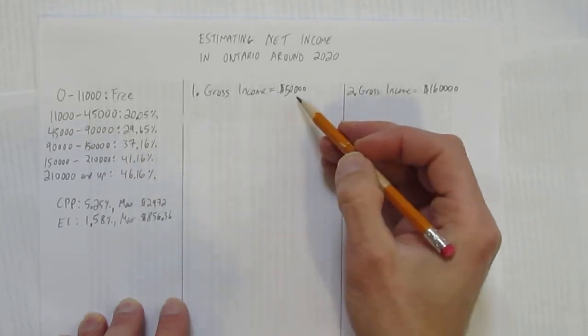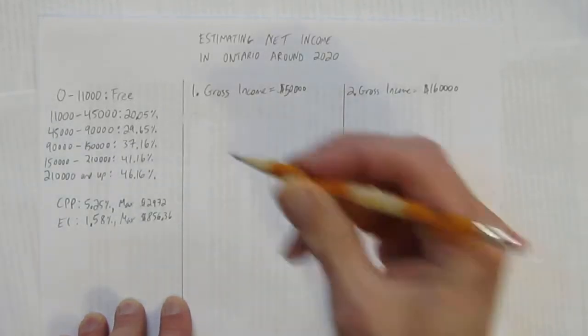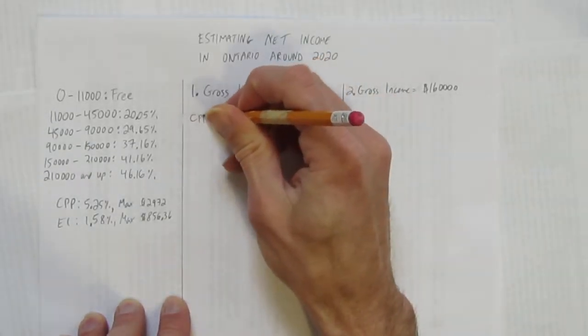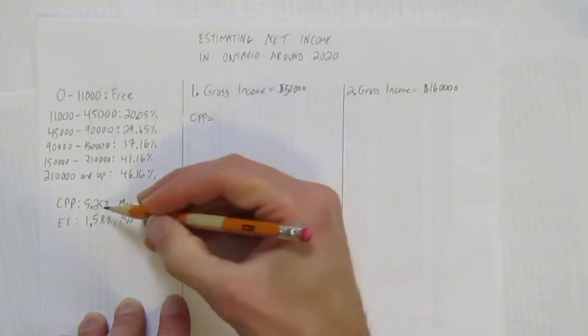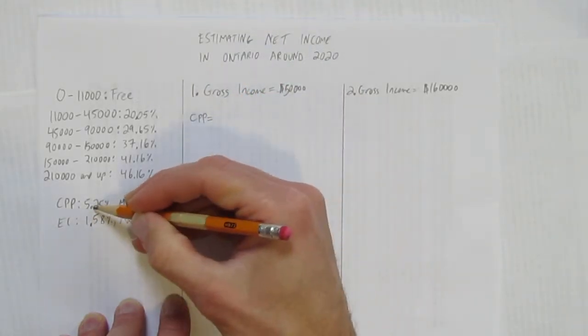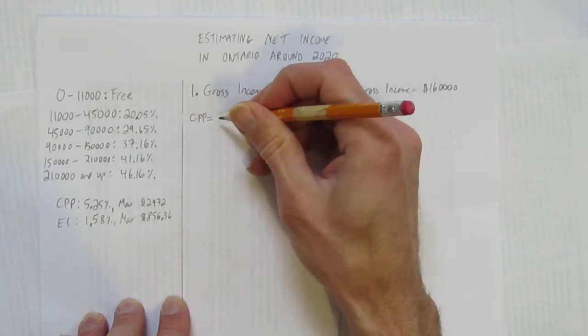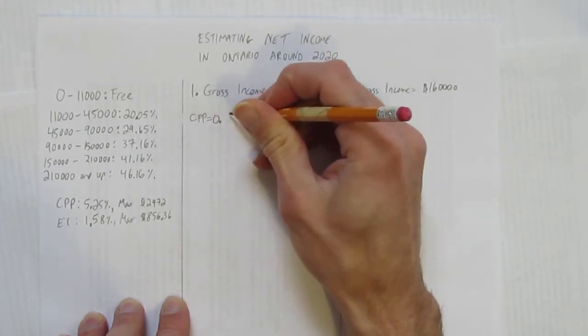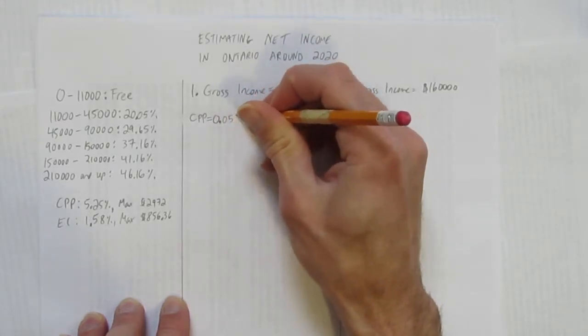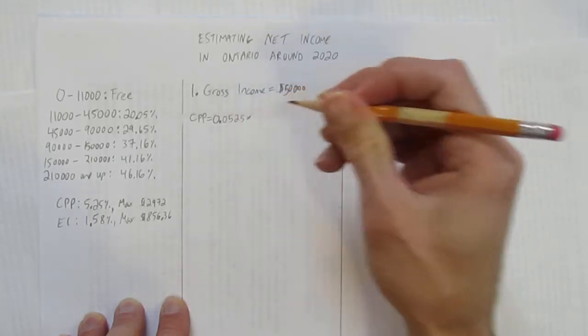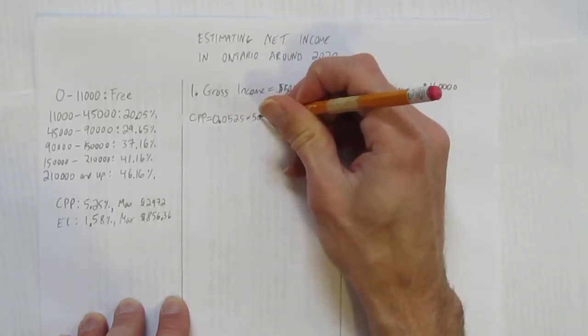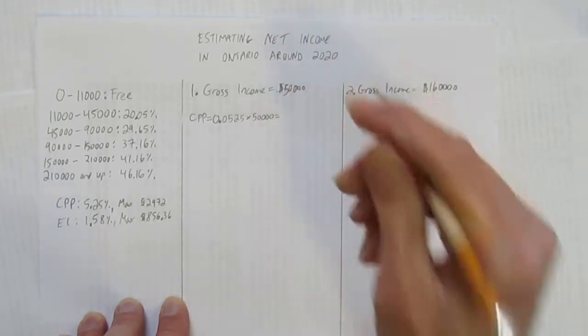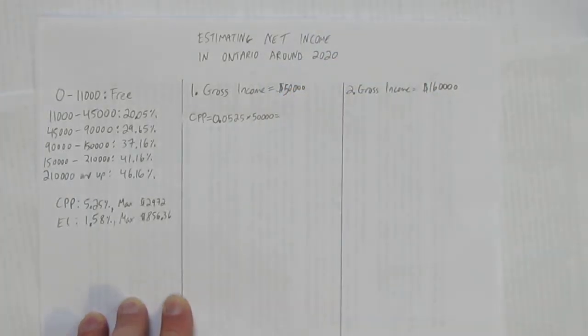Suppose your gross income was $50,000. The first thing we're going to want to do is calculate your CPP. Your CPP charge is 5.25%. Let's convert that to a decimal, divide by 100. And you get 0.0525, times your gross income, $50,000. Let's get a calculator.